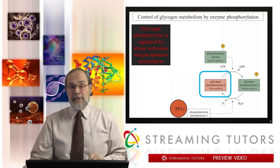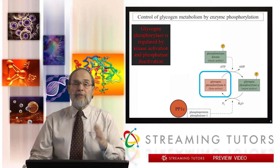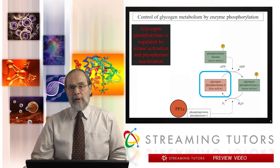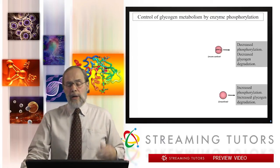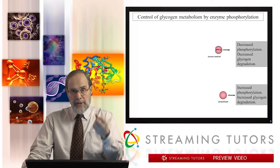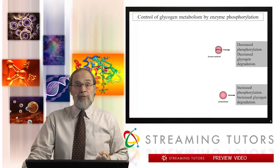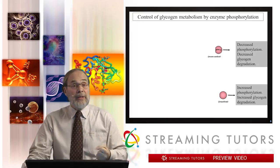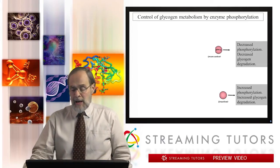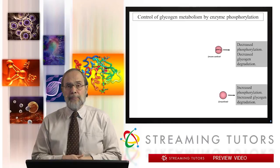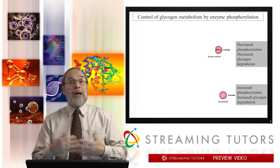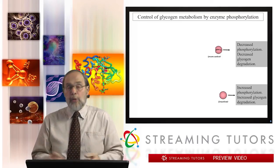When phosphoprotein phosphatase one is active, it decreases phosphorylation by pulling phosphates off of glycogen phosphorylase, which inactivates glycogen phosphorylase and decreases glycogen degradation, allowing increased glycogen synthesis. Conversely, when it is inactive, it allows the kinases to phosphorylate glycogen phosphorylase more heavily, activating the enzyme and increasing glycogen degradation. This is a very general regulatory mechanism.